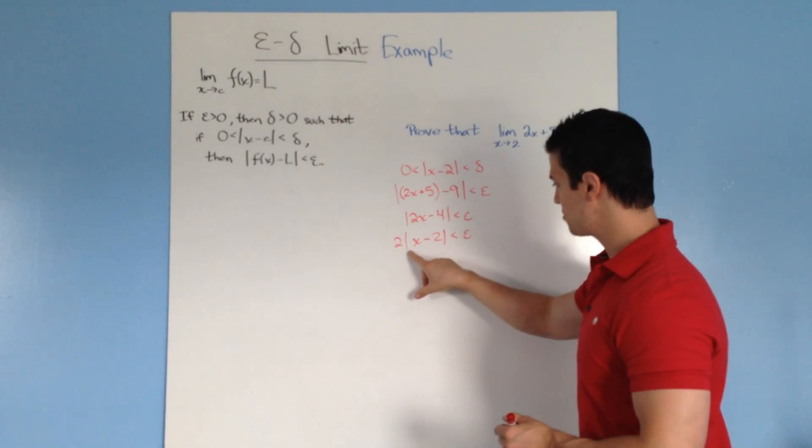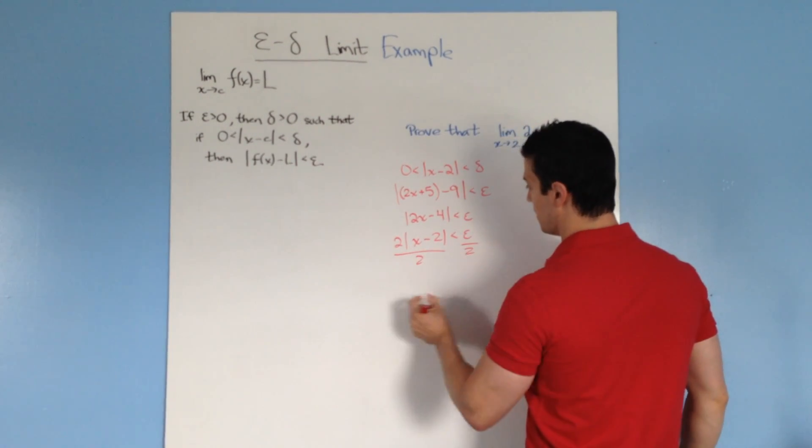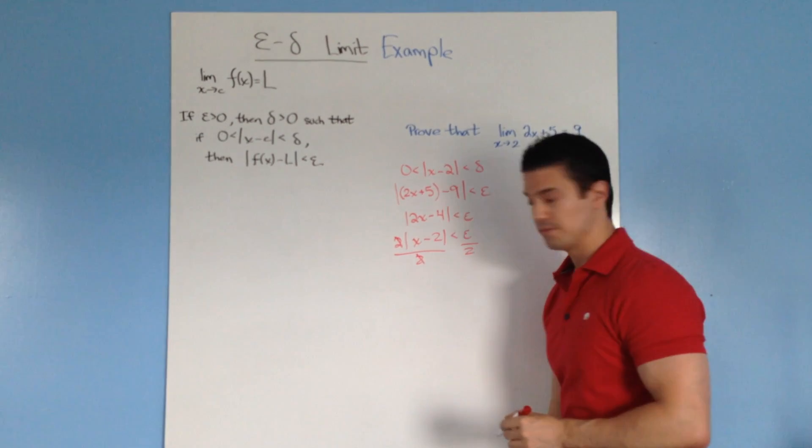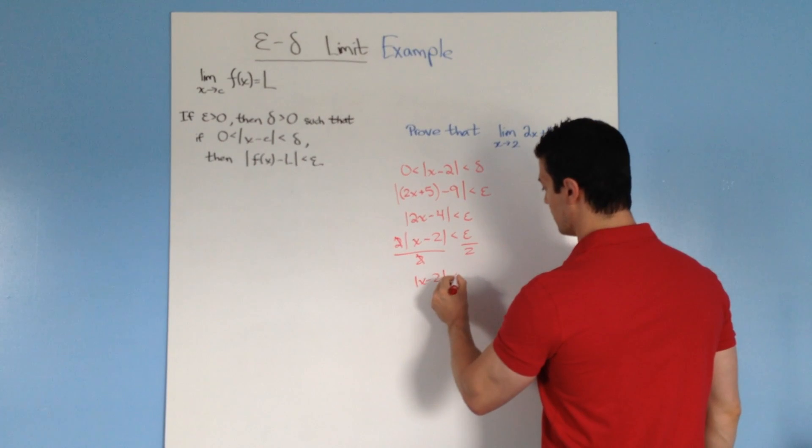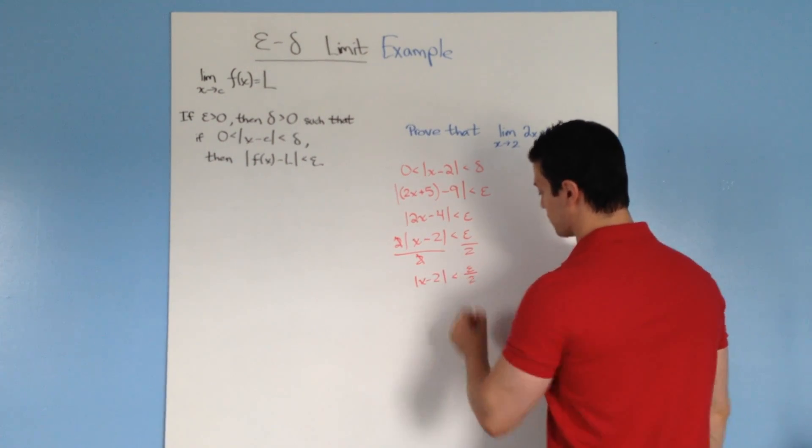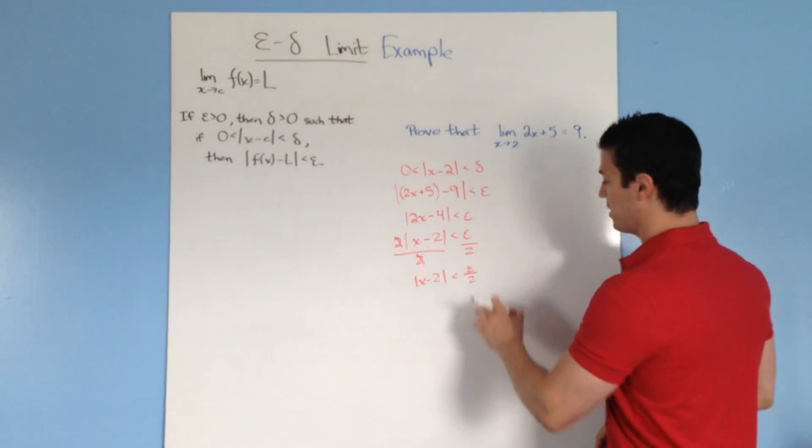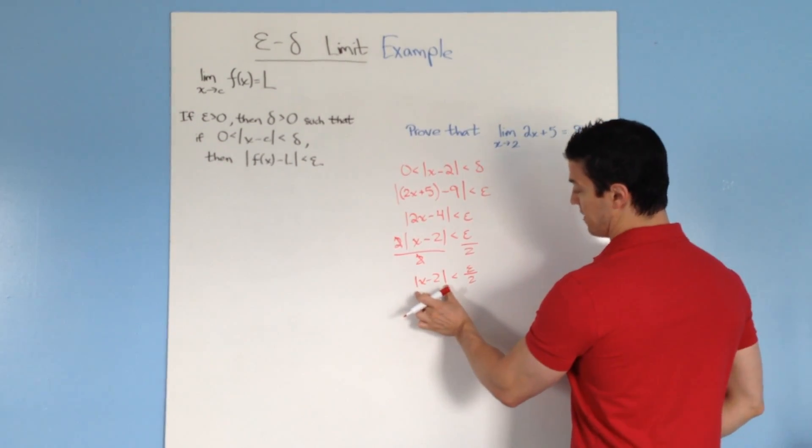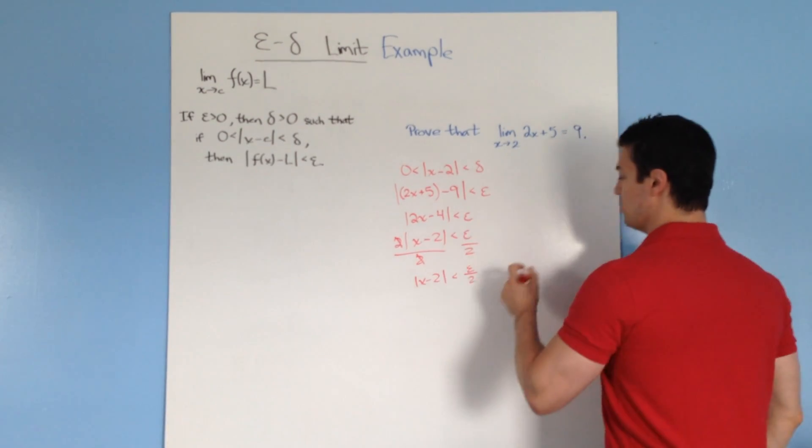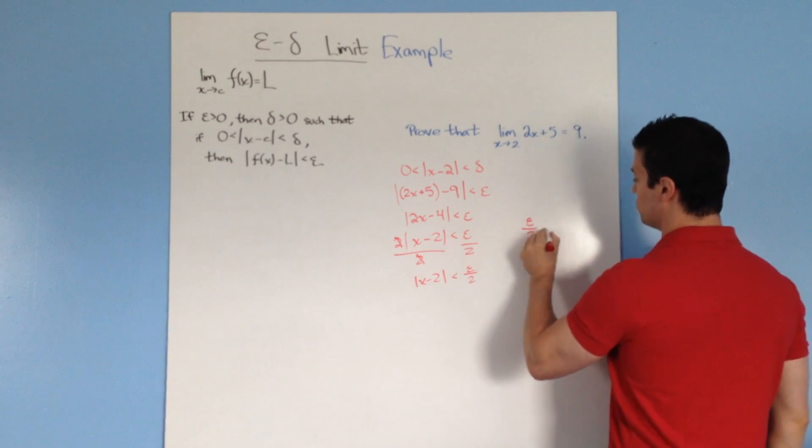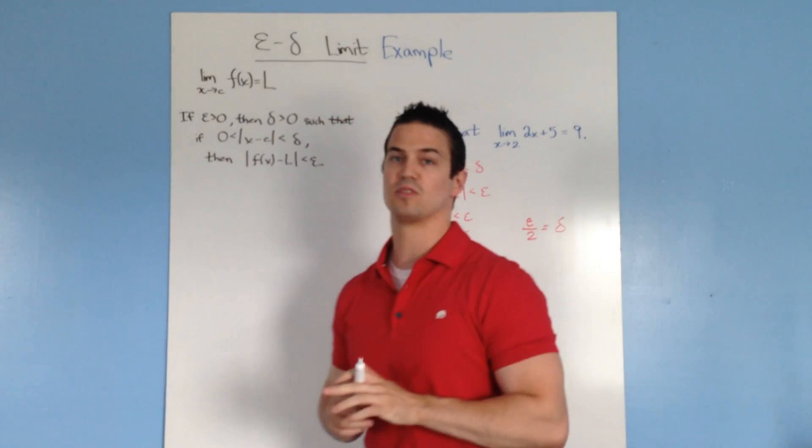So I'm going to solve for the absolute value of x minus 2. Divide both sides by 2. The 2's cancel, and you end up with the absolute value of x minus 2 is less than epsilon over 2. Now we're trying to see the connection between delta and epsilon. Well, here we have this value is less than epsilon over 2, and this value is less than delta. So we can say that delta equals epsilon over 2. And that shows our connection between epsilon and delta.